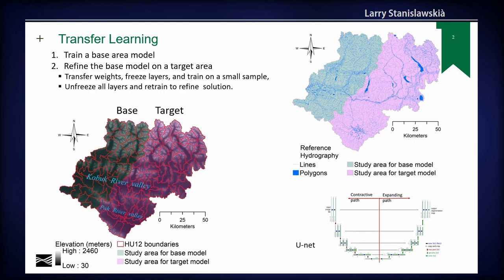Transfer learning is based upon the concept that when you train a neural network model, the basic knowledge is learned in the initial layers and the detailed information is learned in the later layers. So if you train a model, you can transfer it to another area by freezing the earlier layers or some selected layers, then adding some additional training data from the transfer area.